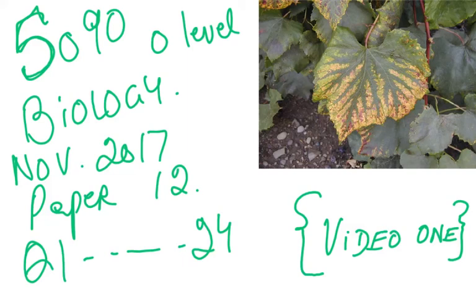We start with 5090 O-Level Biology. Bismillahirrahmanirrahim. November 2017, paper 1-2. We've done paper 1-1 and this will be the second paper that we are doing for the November 2017 exam.